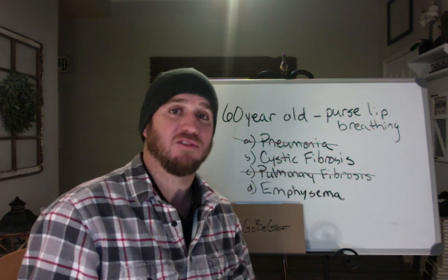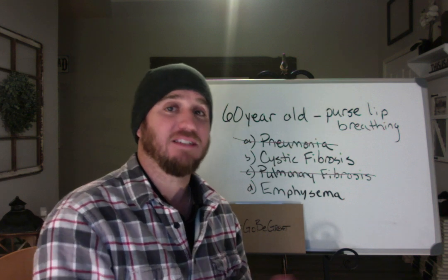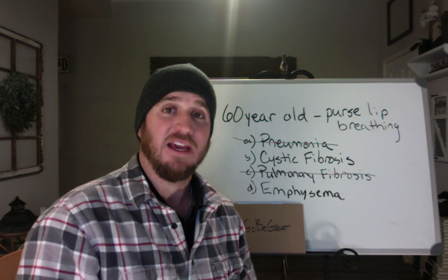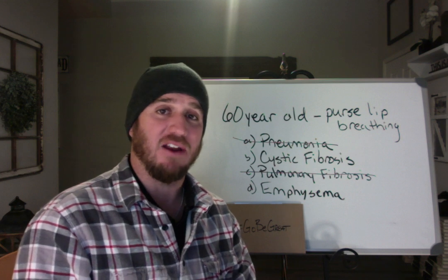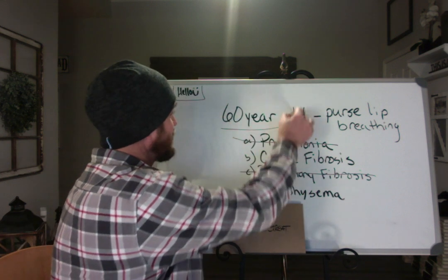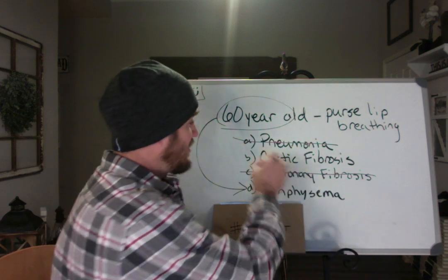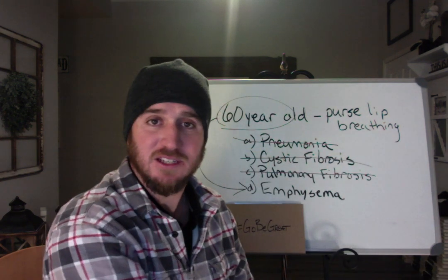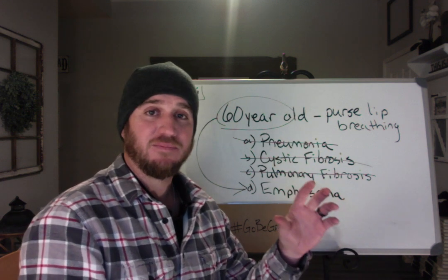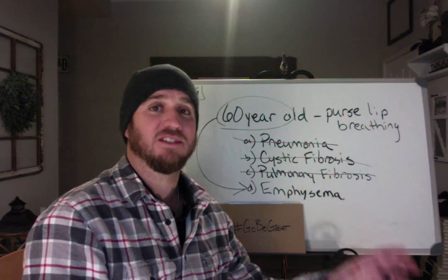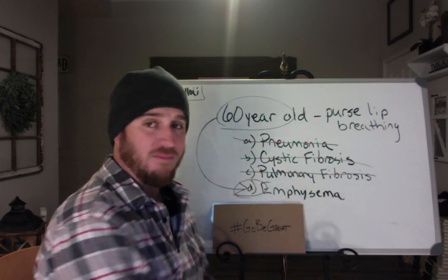Now, if you understand that, then you know most emphysematics usually don't start to develop emphysematic disease processes — signs and symptoms — until they're in their late 50s and 60s. So that right there breaks it down even further. The patient is 60 years old, which takes us to emphysema. A cystic fibrosis patient doesn't live into their 60s. So this patient presents with the keystone sign of pursed lip breathing, consistent with air trapping, which at 60 years old could only be emphysema.